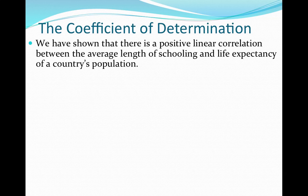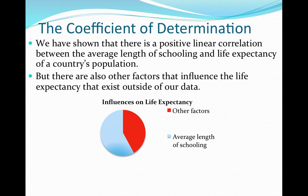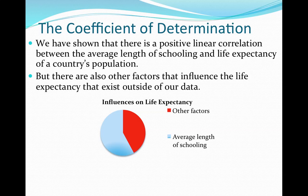We've shown that there's a positive linear correlation between the average length of schooling and life expectancy of a country's population. But there are also other factors that influence life expectancy that exist outside of our data. We have a pie chart here where average length of schooling has an influence on life expectancy, but there are also other factors — geographic, political, and some countries definitely had periods of war that could have impacted life expectancy.